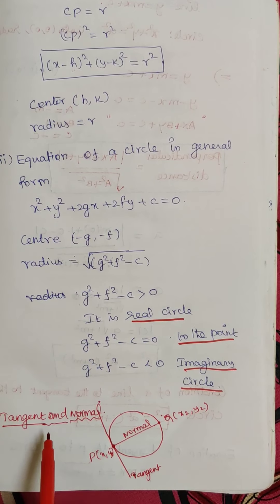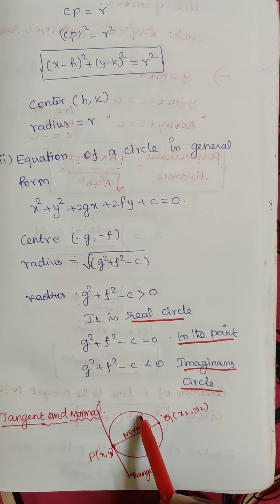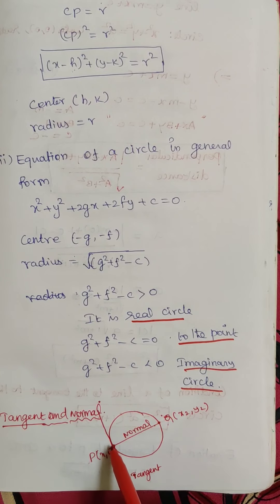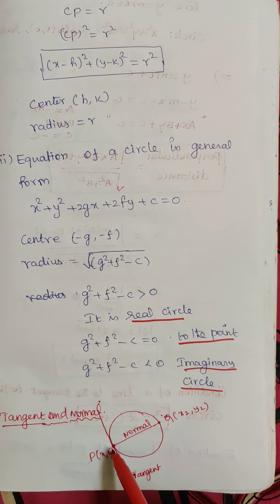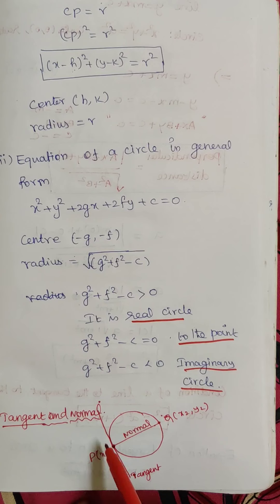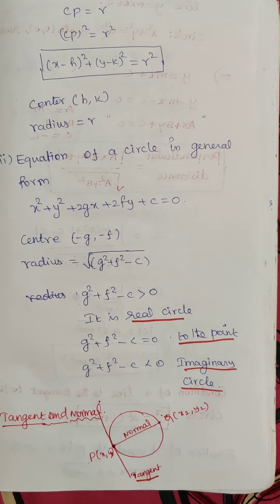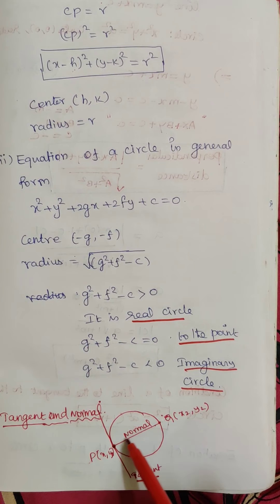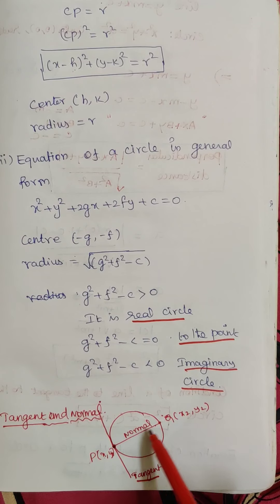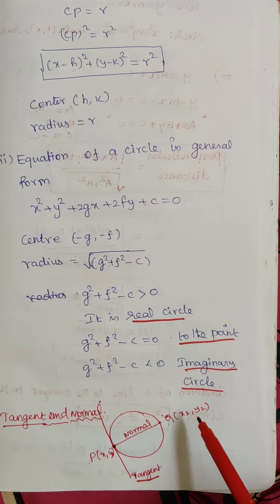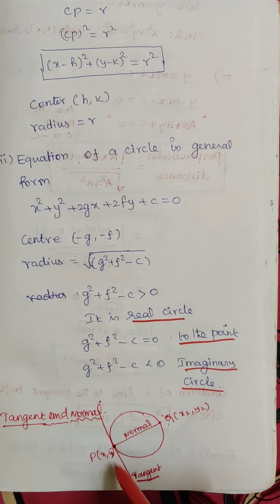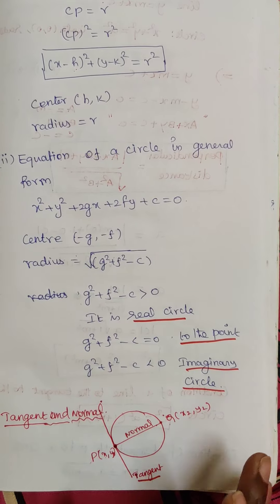The next topic is tangent and normal. A tangent line touches the circle at exactly one point. The point of tangency is called P(x₁, y₁), and the normal passes through that point. The tangent is perpendicular to the normal at the point of contact.